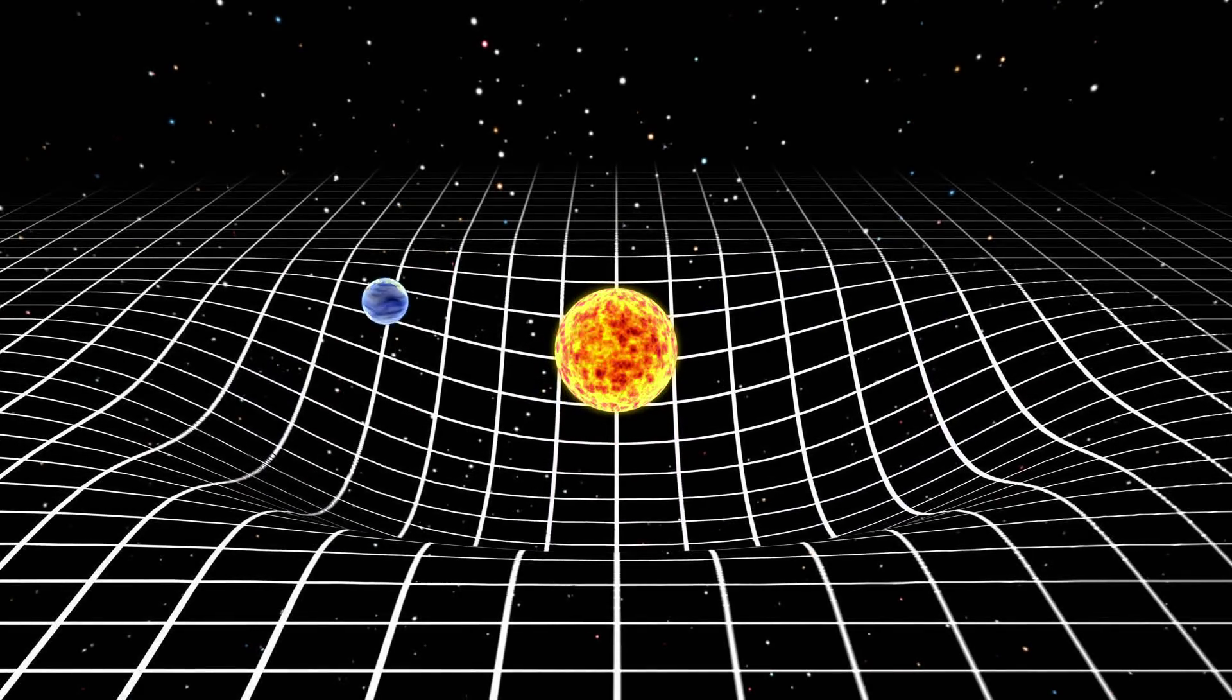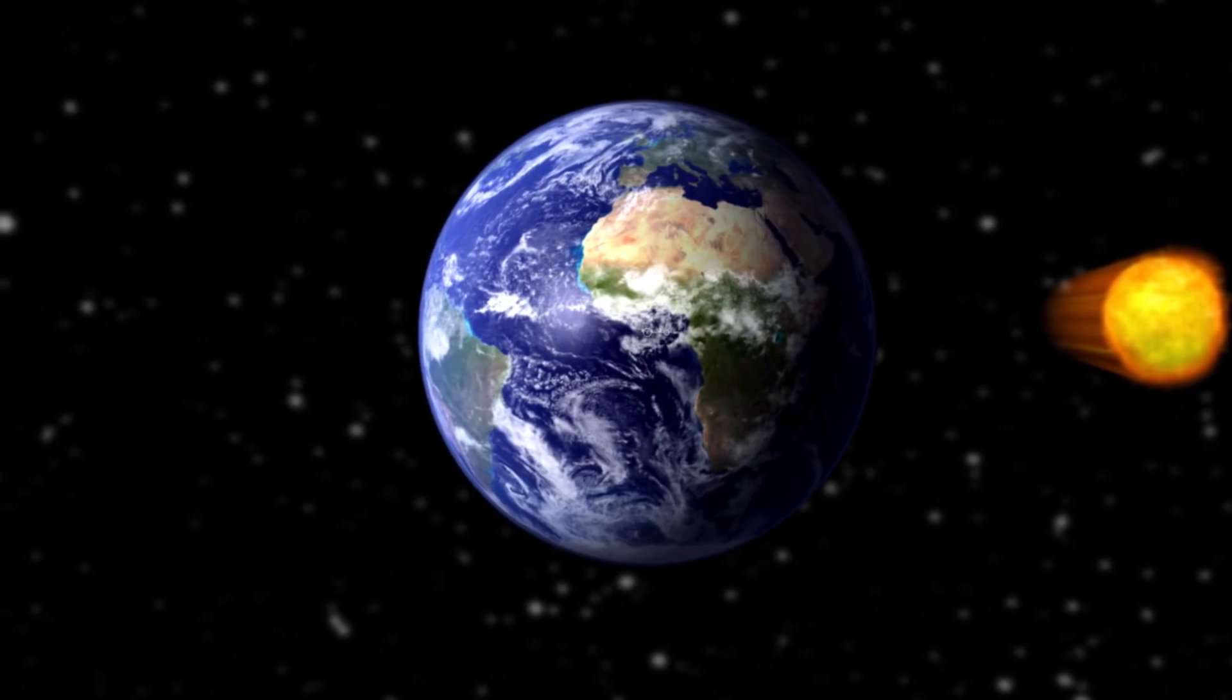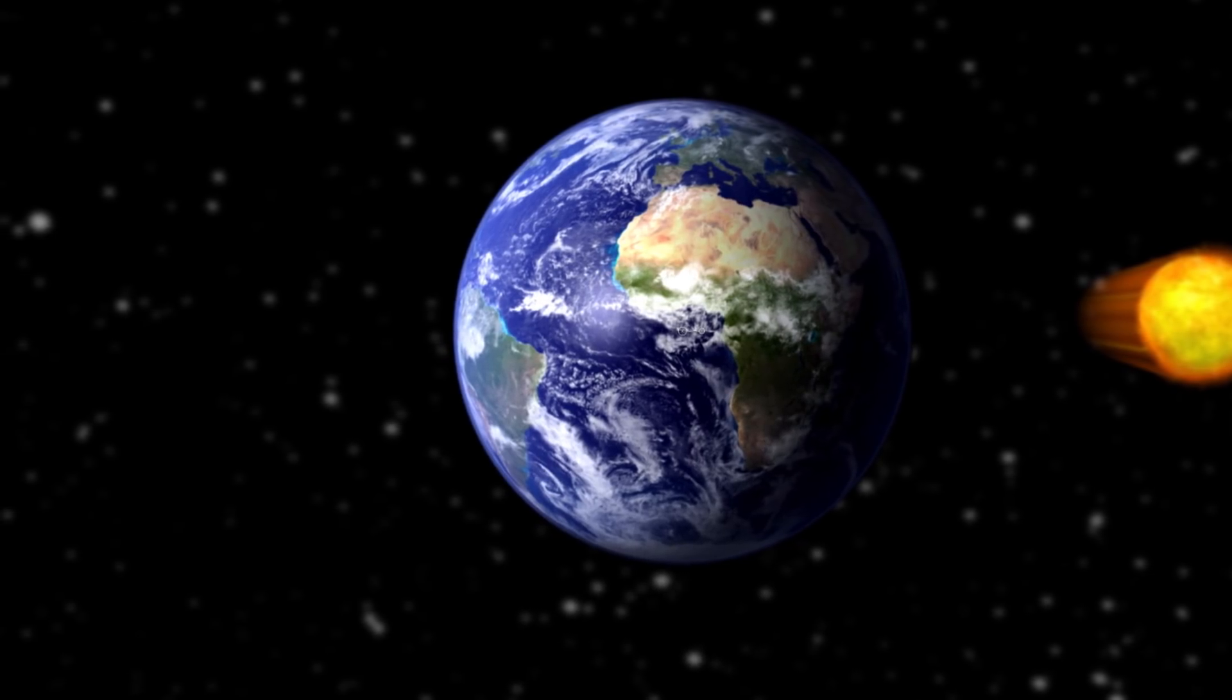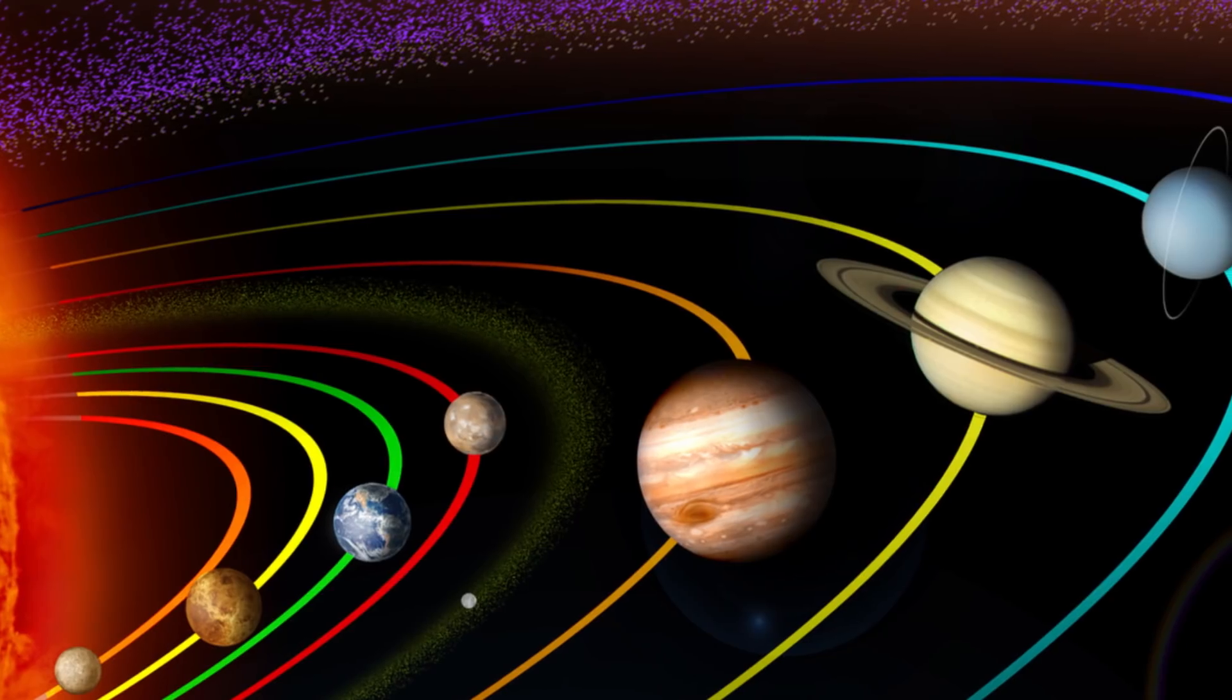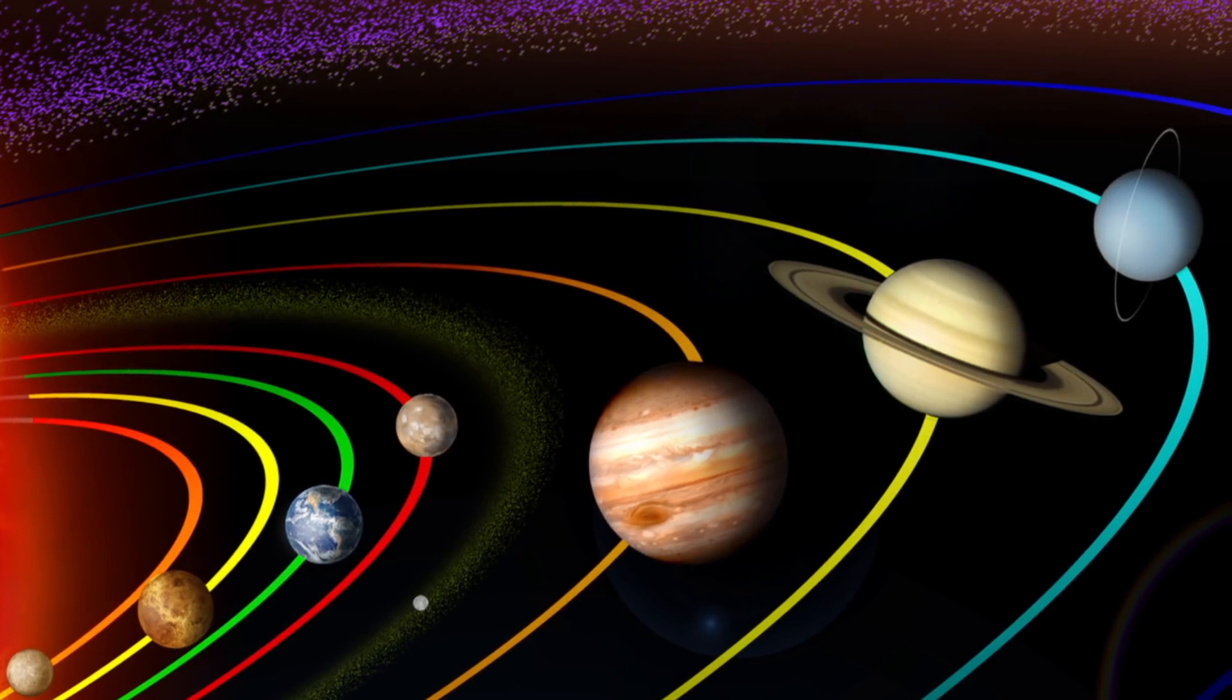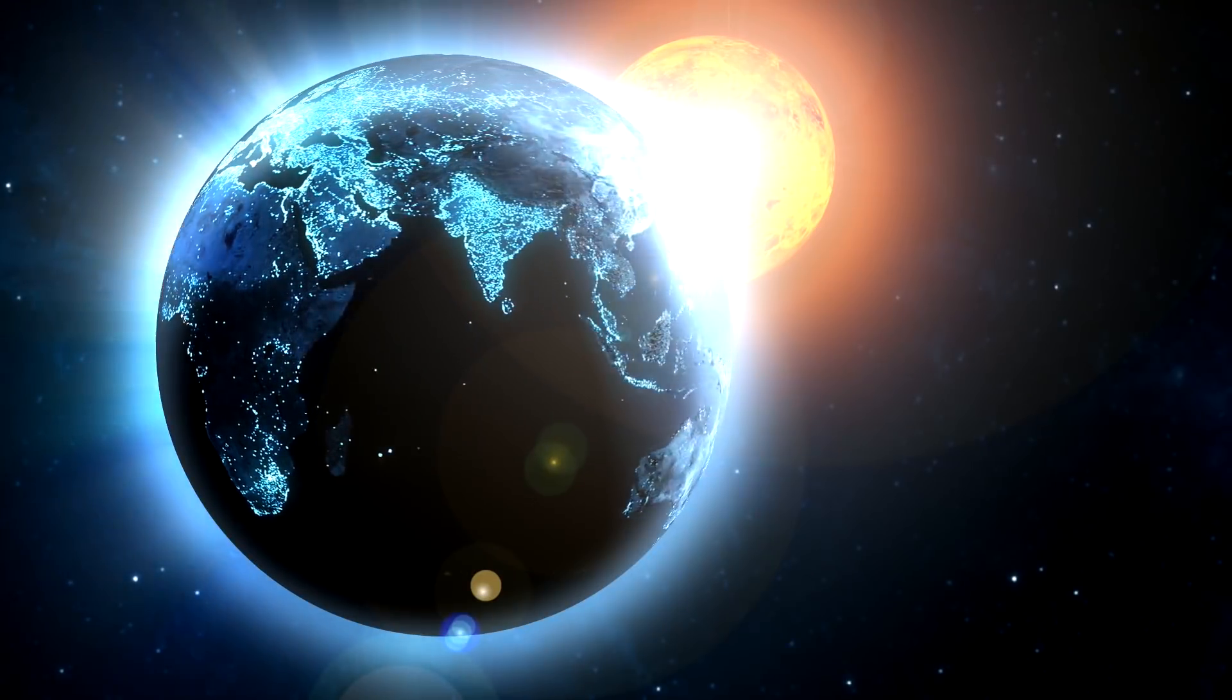Gravity travels at the speed of light as well, so we would see the sun go out, and we would feel it disappear at the exact same time. If the sun disappeared, even if it were just for 5 seconds, all the objects in our solar system would assume an unstable orbit. They would then be sent flying in the direction that they were headed, in a straight line rather than continuing on their elliptical orbits.